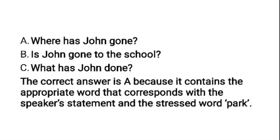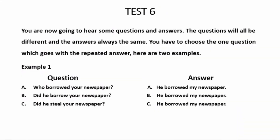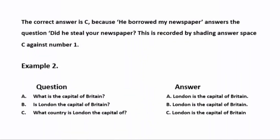Now let us proceed to answer the rest of Test 6. You are now going to hear some questions and answers. The questions will all be different and the answer is always the same. You have to choose the one question which goes with the repeated answer. Here are two examples. Example 1. A: Who borrowed your newspaper? — He borrowed my newspaper. B: Did he borrow your newspaper? — He borrowed my newspaper. C: Did he steal your newspaper? — He borrowed my newspaper. The correct answer is C because 'He borrowed my newspaper' answers the question 'Did he steal your newspaper?' This is recorded by shading answer C against number 1.